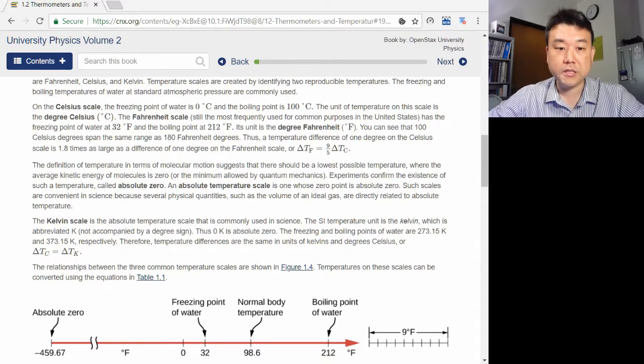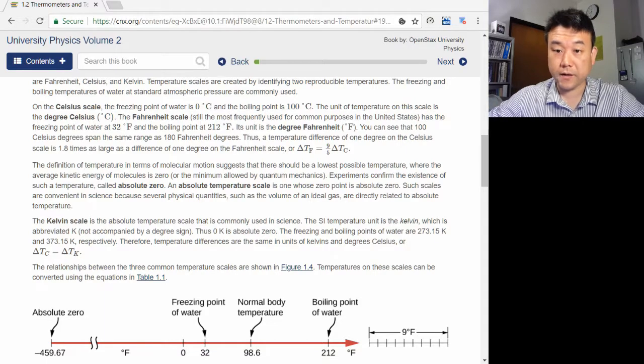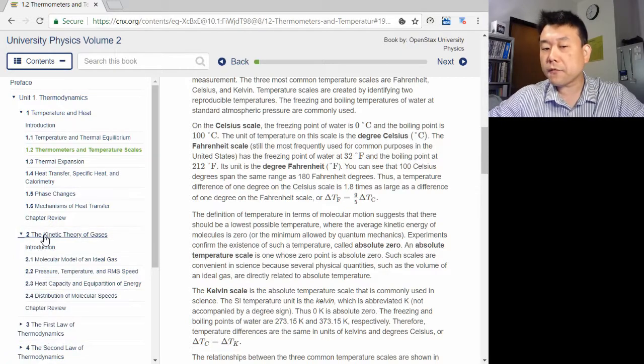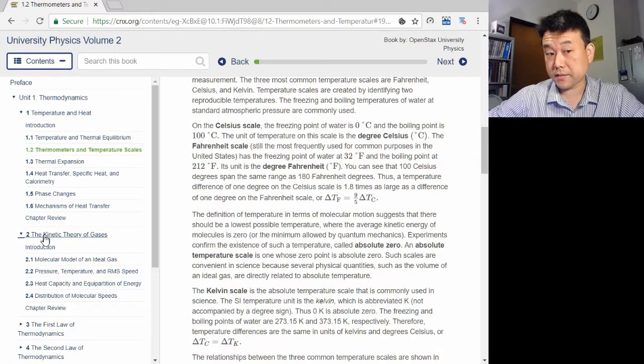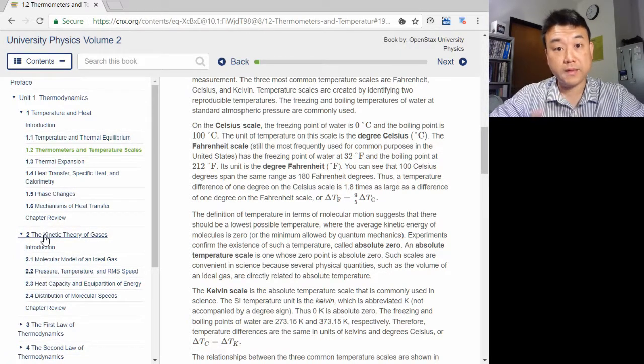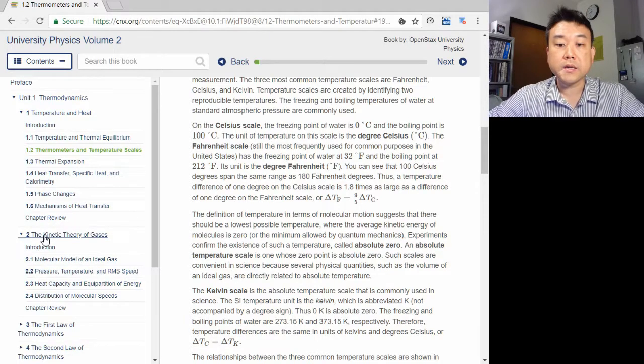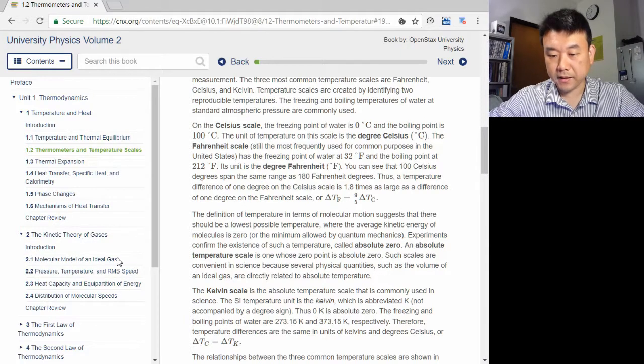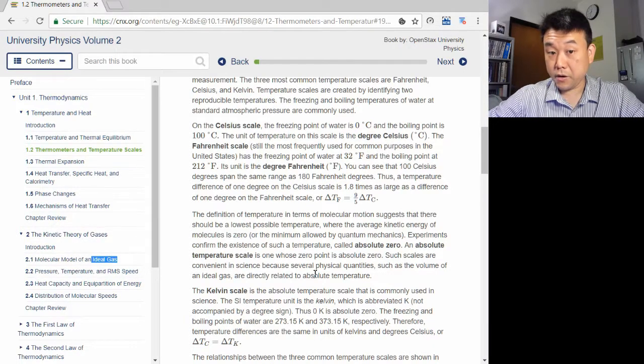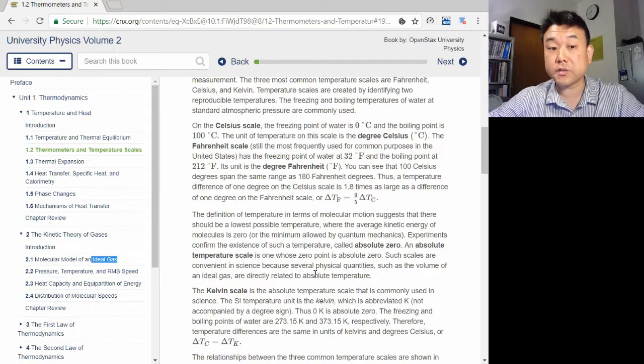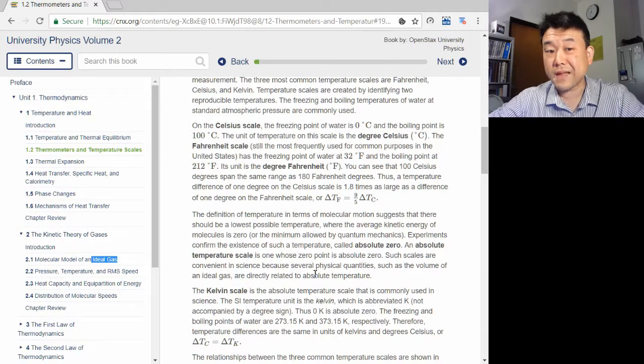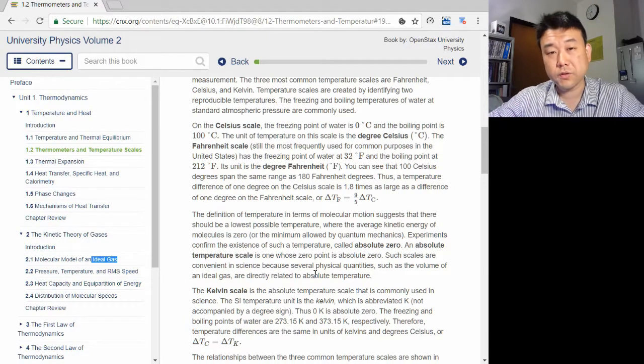We will get to this special meaning of zero Kelvin in the next chapter, the kinetic theory of gases. But for now, I will leave you with this. In this class, when in doubt, express temperatures in the Kelvin scale. You will see a few formulas and laws later on which will assume that temperatures are expressed in an absolute temperature scale. If you use the numbers in the Celsius scale and not the Kelvin scale, you will end up with the wrong results.